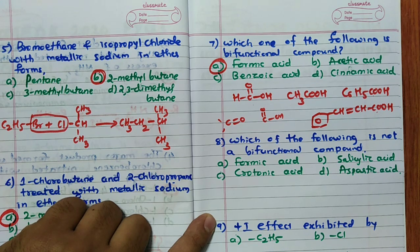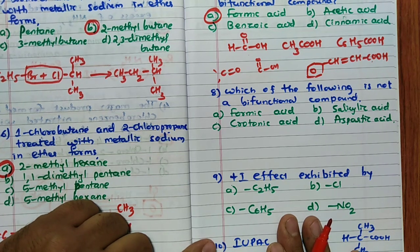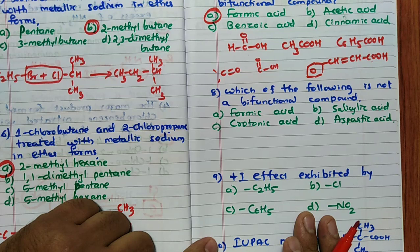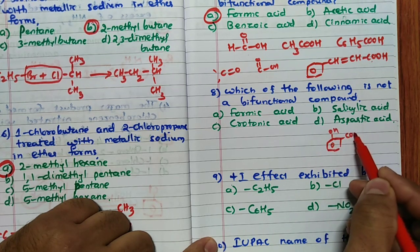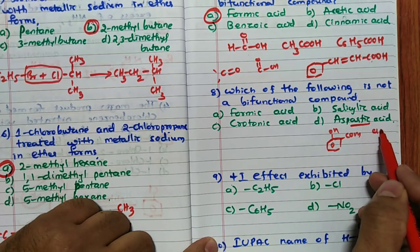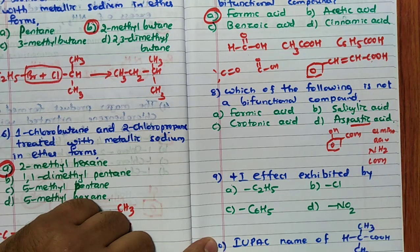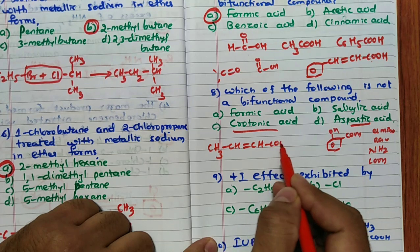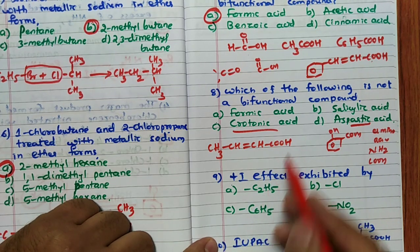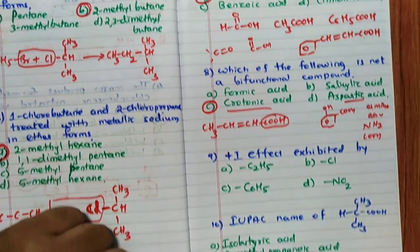Eighth question: which of the following is NOT a bifunctional compound? Formic acid is bifunctional (as just discussed). Salicylic acid is bifunctional (–OH and –COOH groups). Aspartic acid is an amino acid with –NH₂ and –COOH groups, so also bifunctional. Crotonic acid is CH₃–CH=CH–COOH, which has only one –COOH functional group. Therefore, crotonic acid is not bifunctional — it is the answer.